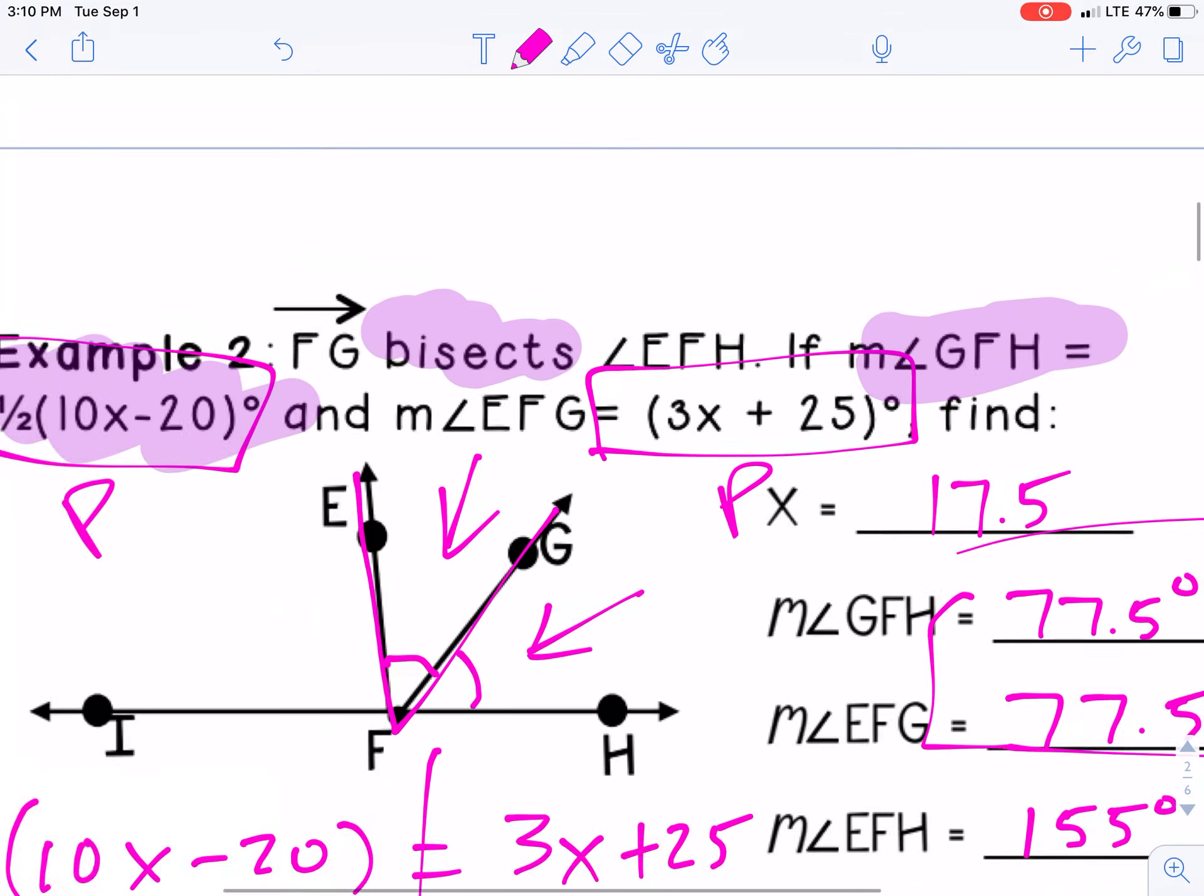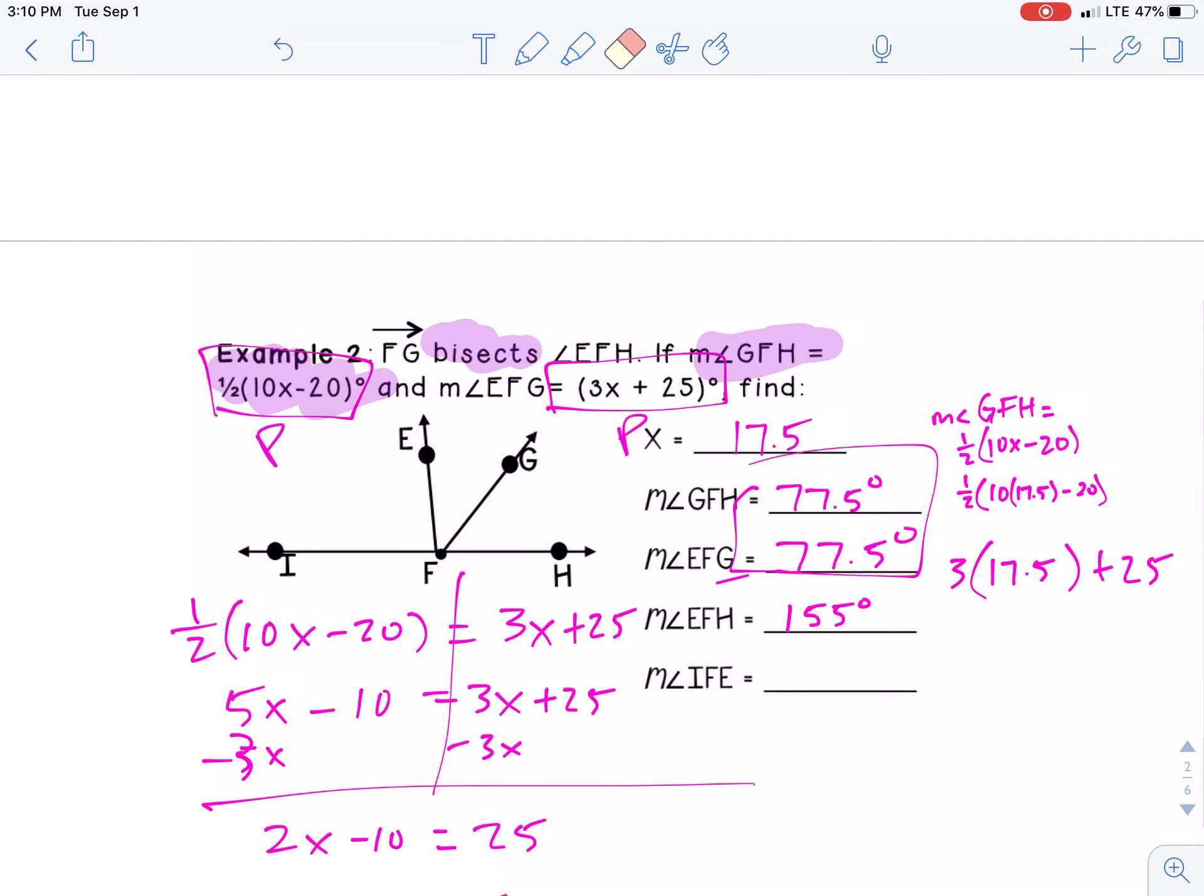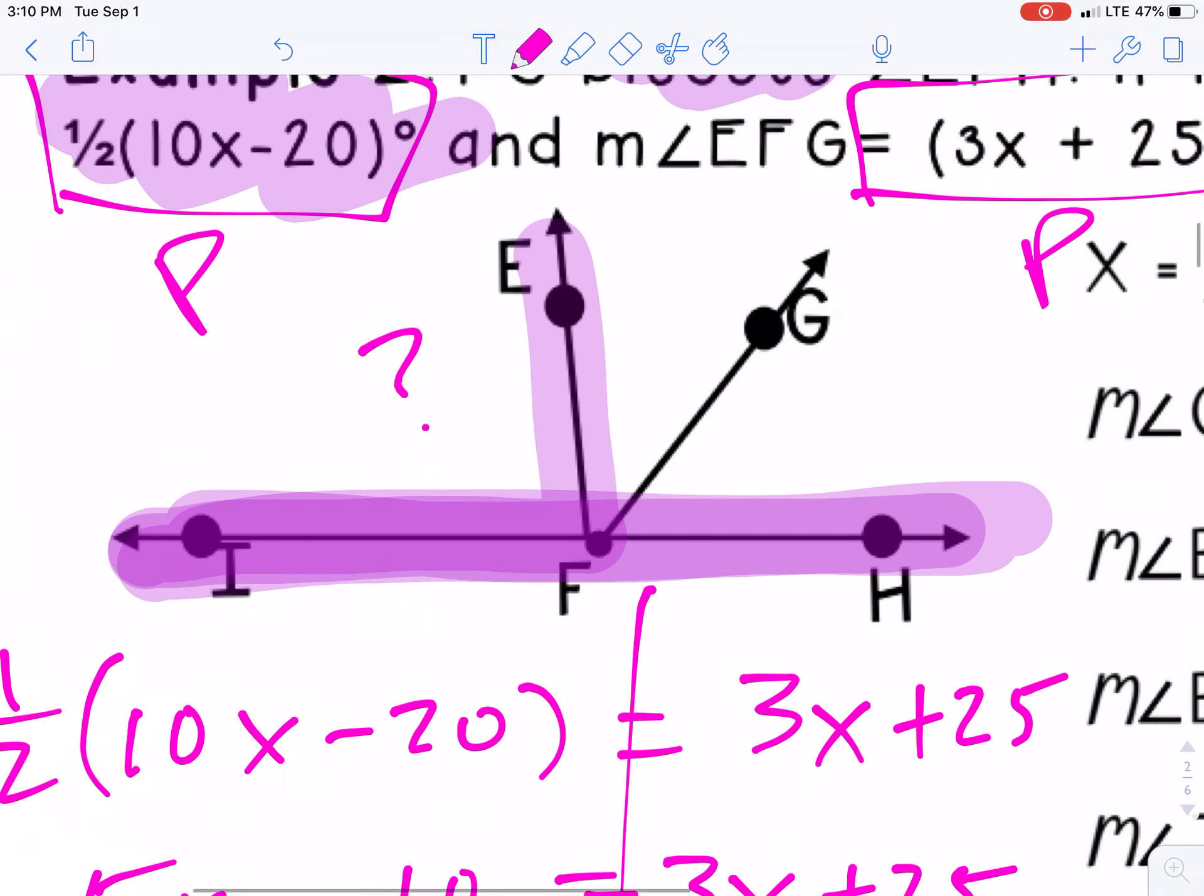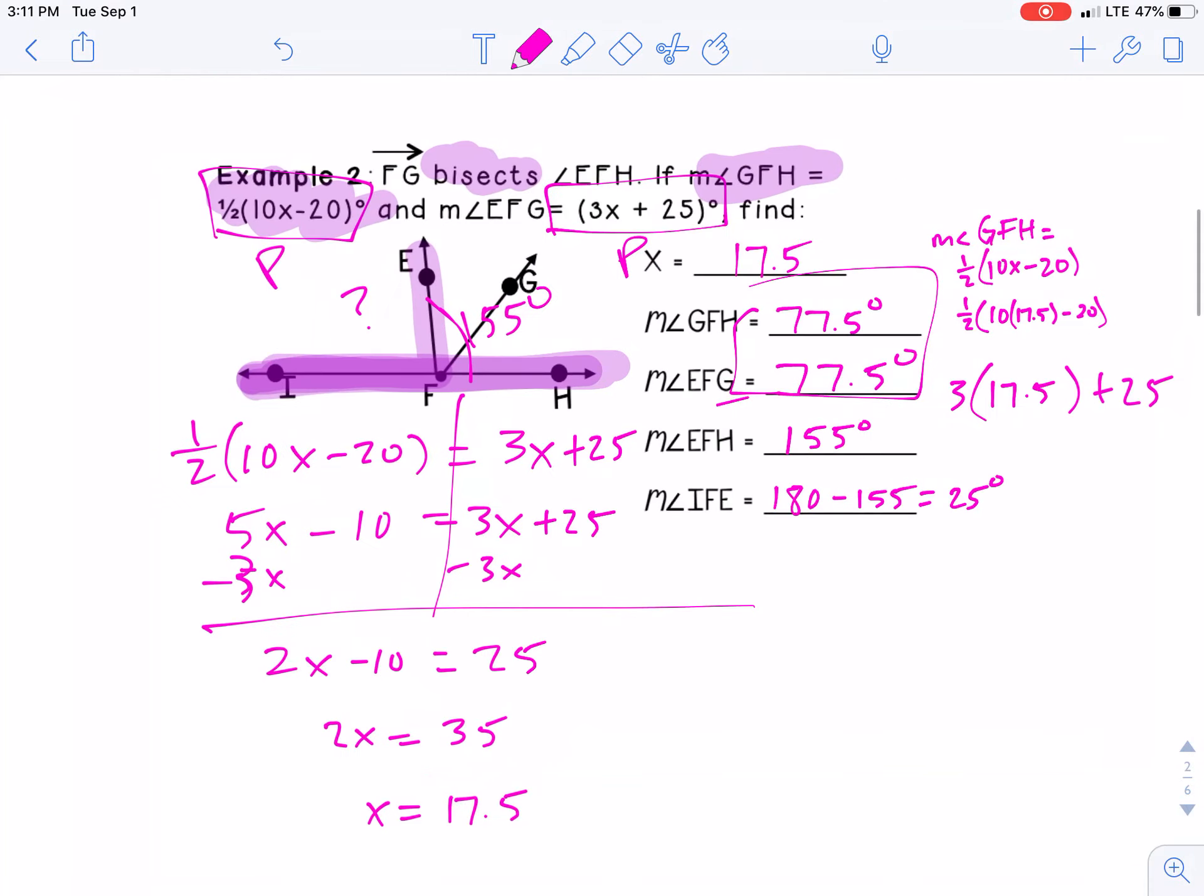Now here's the extra credit problem. IFE, okay, so I'm going to erase some of this stuff over here. IFE is this guy right here, that's the one we're finding. So what we're going to do is we're going to use this idea and concept that IFH is what type of angle? Great, it's a straight angle and that's 180 degrees. And we're taking that into two parts. I don't know IFE, but I do know EFH from before is 155 degrees. This whole thing is 155. So to find out IFE we're going to take the straight angle which is 180 minus the 155 and we get 25 degrees.